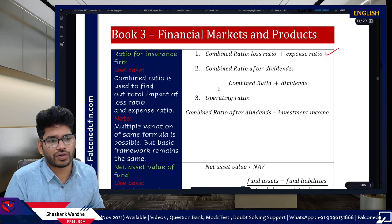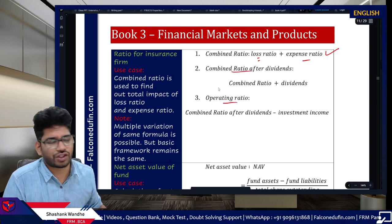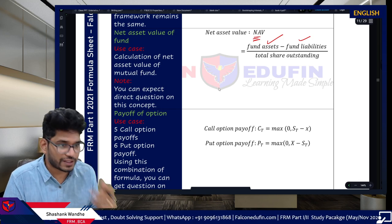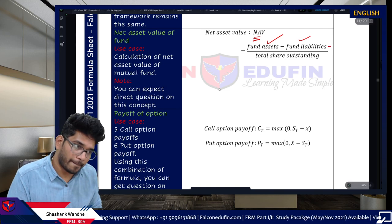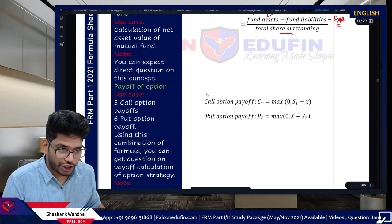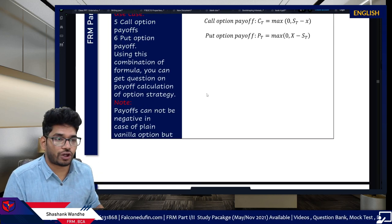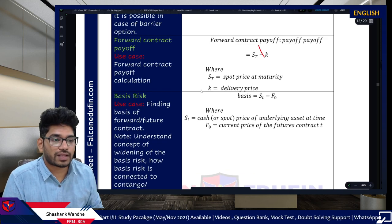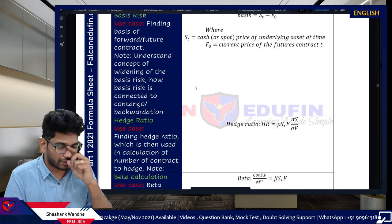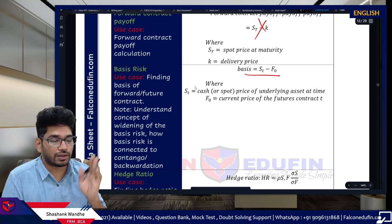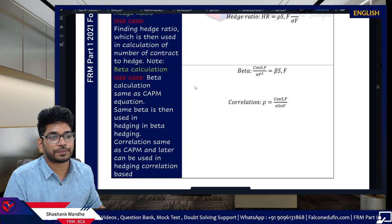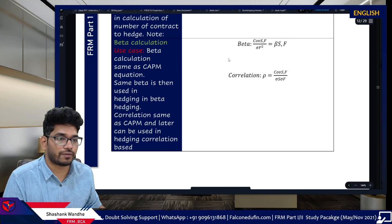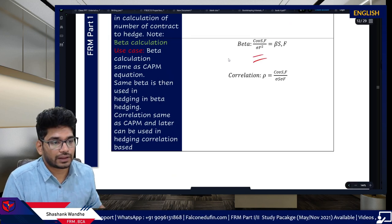Moving to Book 3 — Financial Markets and Products. For insurance: combined ratio = loss ratio + expense ratio; then operating ratio follows. For mutual funds: Net Asset Value = fund assets - fund liabilities - expenses, divided by total shares outstanding. Call option payoff and put option payoff — use the concept, not the formula. Same applies for forward contract payoffs. Basis for forward and spot: S(t) minus F.